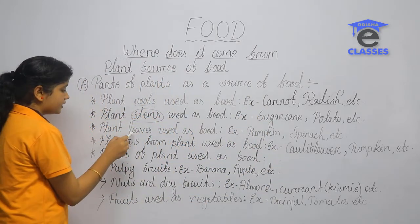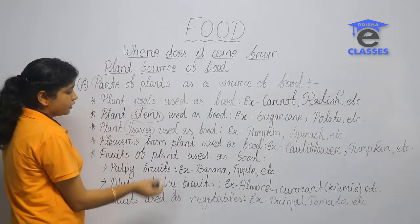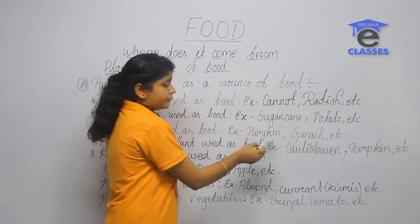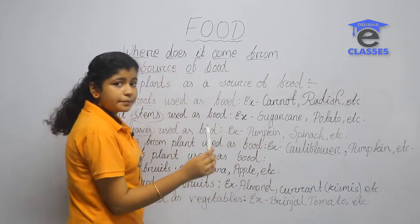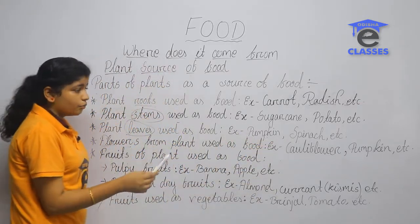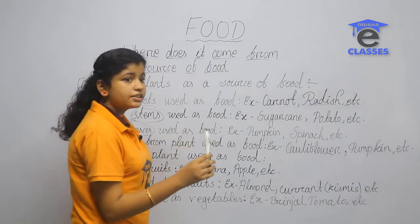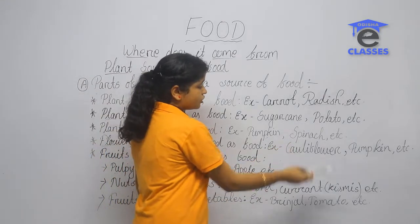Plant leaves are used as food. For example, pumpkin leaves and spinach. We eat pumpkin leaves, sago curry, and spinach.